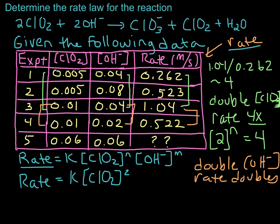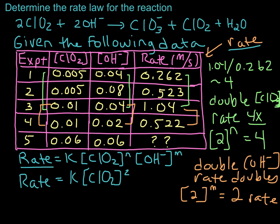Setting up the equation the same way: if doubling the concentration of hydroxide doubles the reaction rate, then 2 to the power M equals 2, so M must equal 1. This reaction is first order in hydroxide — when we double the concentration, the rate doubles.